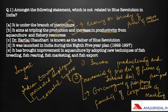The third statement says Dr. Harilal Chaudhuri is known as the father of Blue Revolution. There are two fathers of Blue Revolution: the first one is Dr. Harilal Chaudhuri and the second is Dr. Arun Krishan. These two are known as the fathers of Blue Revolution in India.